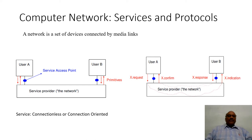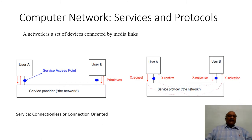As far as the computer network is concerned, everyone should have clarity on services and protocols. Basically, a network is a set of devices connected by media links. Whenever there is an exchange of information from a user A to a user B with the help of a network, there are certain mechanisms to be understood: services and protocols. A service can be connectionless or connection-oriented — meaning a connection is established between user A and user B for effective data exchange, or sometimes there will not be any connection between these two entities, which we call connectionless.